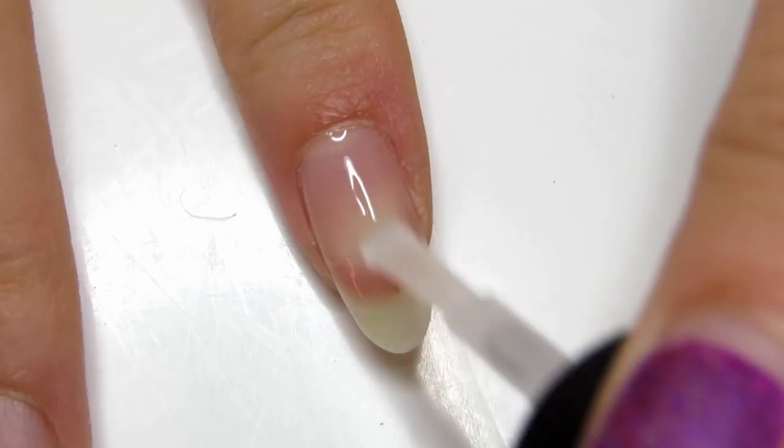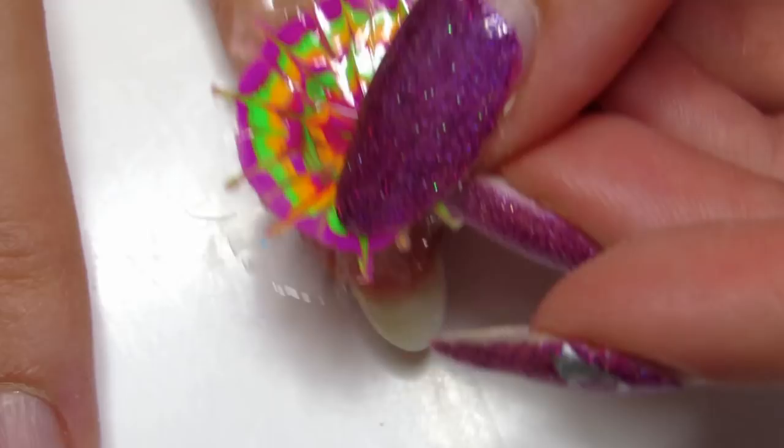To apply it to your nail, you just paint on your base coat and before that dries, stick on your nail sticker.